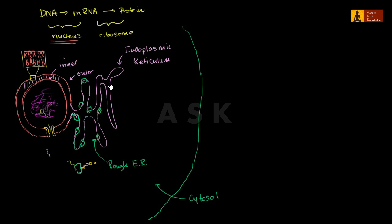Then there's another region: the smooth endoplasmic reticulum. The role the rough ER plays in protein synthesis is this: messenger RNA can find one of the ribosomes associated with the rough ER, and as the protein is translated, it won't be translated into the cytosol — it will be translated on the other side, into the lumen of the rough endoplasmic reticulum.